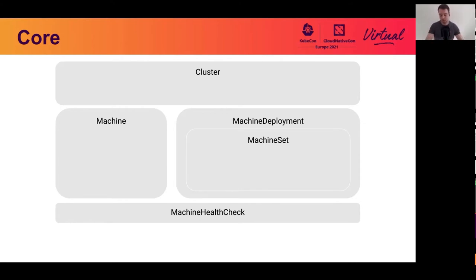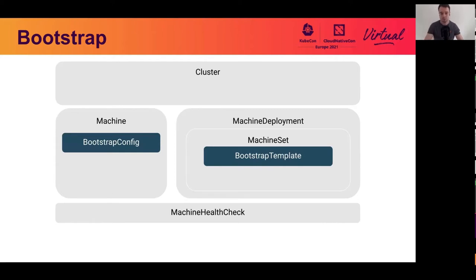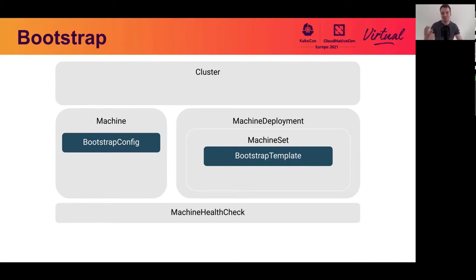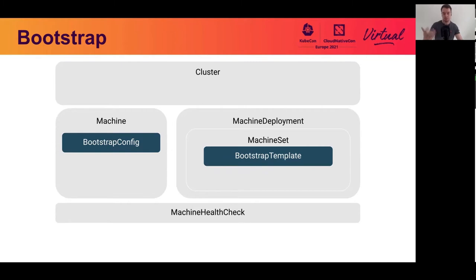The core provider provides the concepts and glue between interchangeable components, and the core controller manager itself is not interchangeable — it's always the same when using Cluster API. The bootstrap controller manager, however, is interchangeable. Bootstrap is handled at the machine set level via a bootstrap template, and at the machine level via a bootstrap config, which is an instance of that template — similar to how a pod template relates to a pod in vanilla Kubernetes.